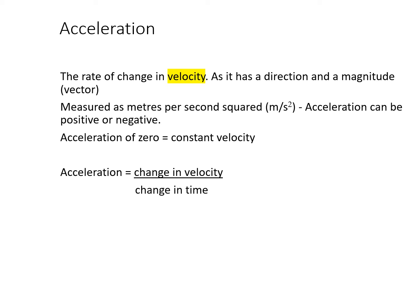Acceleration is the rate of change in velocity, measured in metres per second squared. It can be positive or negative — going faster or slower. If acceleration is technically zero, you have constant velocity. The formula for acceleration is the change in velocity over the change in time.